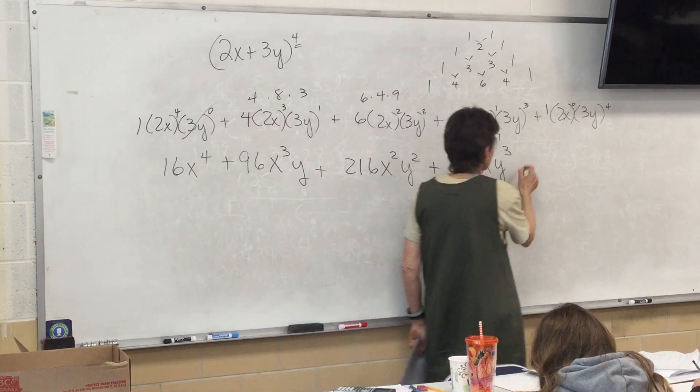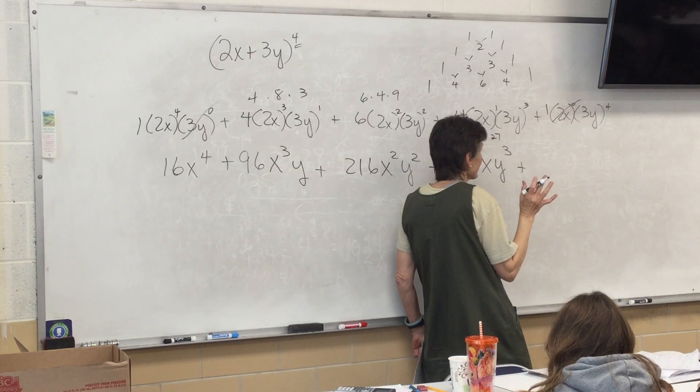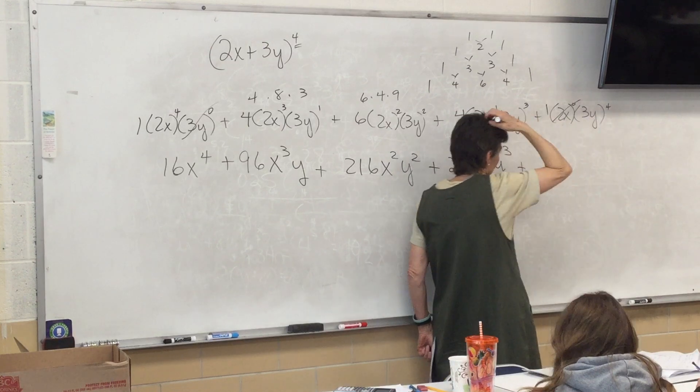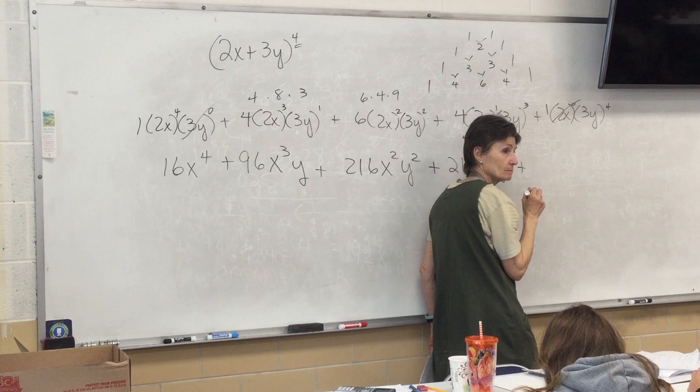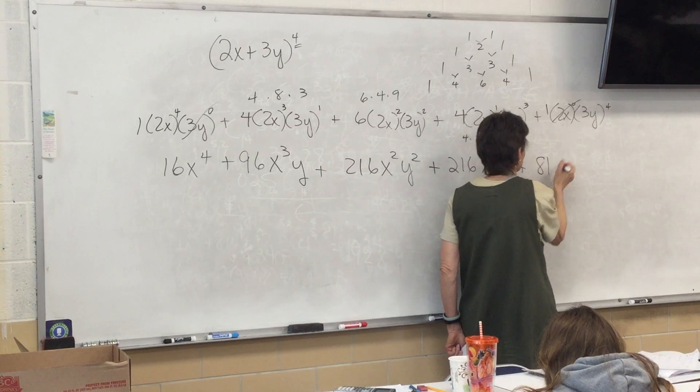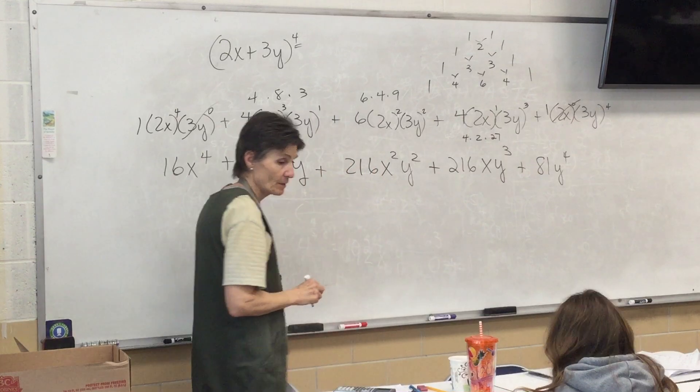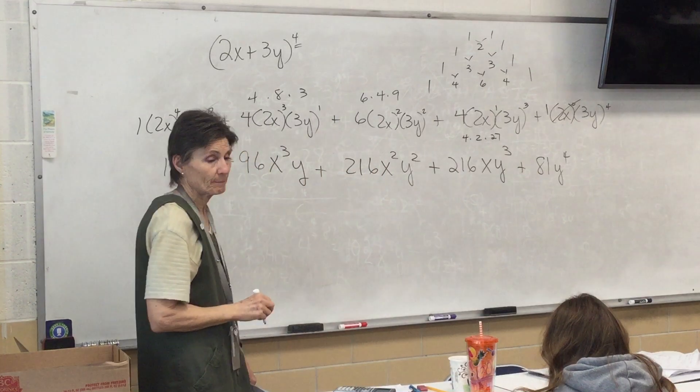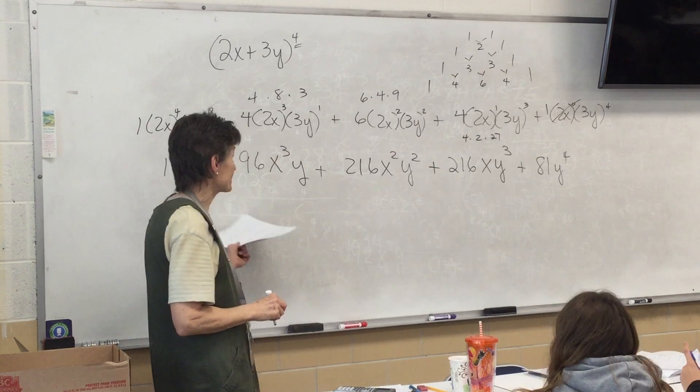And then finally on the end, anything to the 0 is 1. So, we disregard it. What's 3 to the 4? 81. You guys should know that one, even without a calculator. But, if you don't, you can type it in. And there is the answer. Anybody have a question about that? That's the biggest problem.